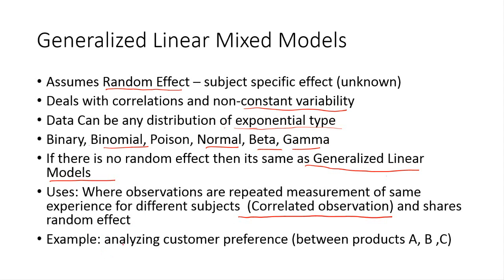Another example is if you want to analyze the customer preference between products A, B, and C. We can conduct an experiment and collect data, which could be highly correlated because the same product is being used for experimentation a number of times. There will also be a random effect because of the subject-specific effect from three different products. The customer satisfaction or preference would be due to specific characteristics of the product, which could have a specific effect known as the random effect. In this kind of example, we can use generalized linear mixed models.